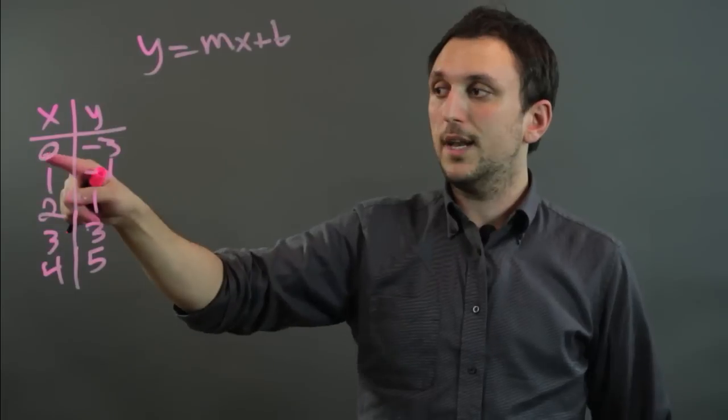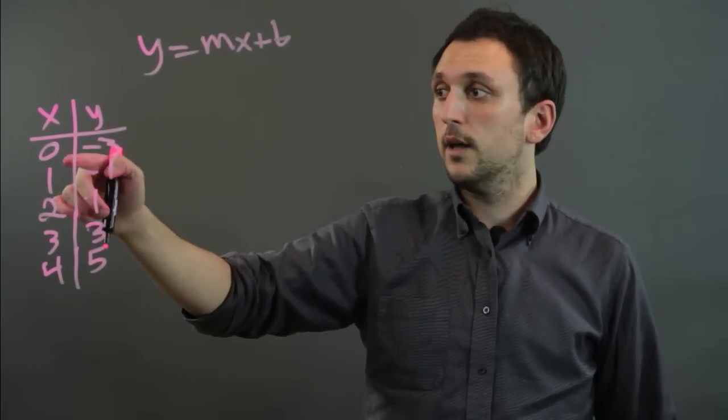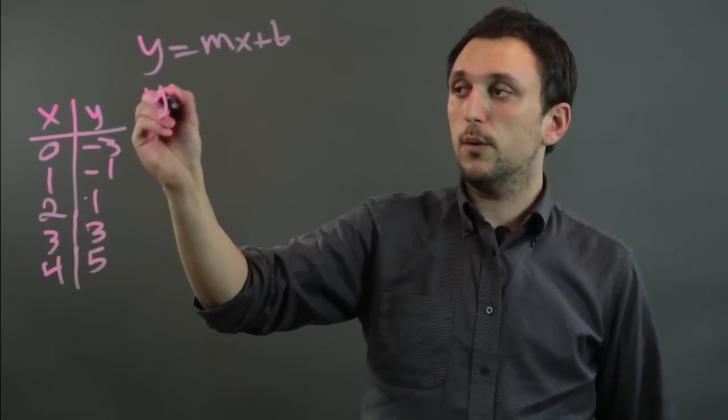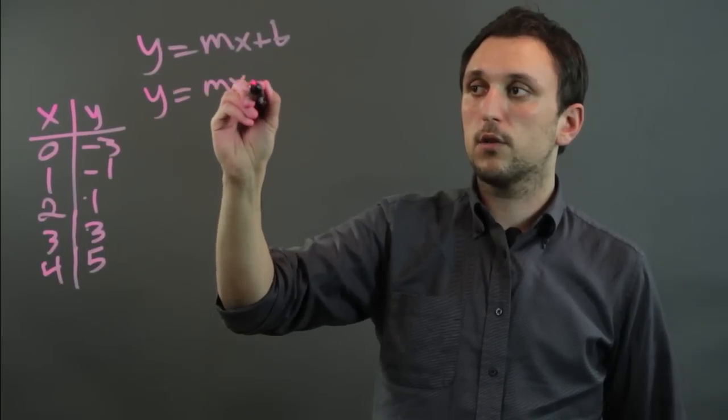So the y intercept is when x equals 0, where is y? So that one's very simple. When x is 0, y is negative 3. So now we know we have y equals mx minus 3.